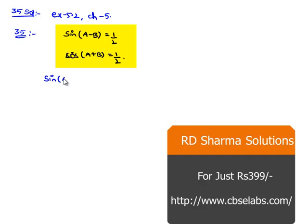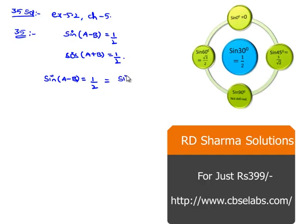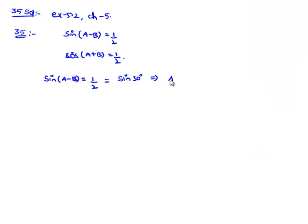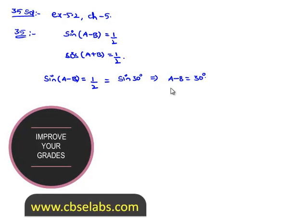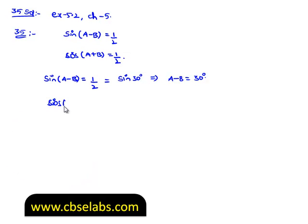sin of a minus b that is equal to half, we can write half as sin 30 degrees, that implies a minus b is equal to 30 degrees.